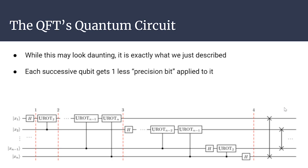Each successive qubit gets one fewer precision step applied. Looking at the first qubit, up to step 3 on the diagram, we go from U-rot 2 all the way to U-rot N, so N operators are applied to the first qubit. The second qubit goes only to U-rot N−1, giving N−1 total operators. The last qubit only gets the Hadamard gate and a single U-rot 2 applied. This decreases the amount of precision put into each qubit as we go successively.